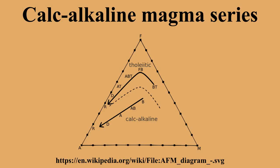Calc-alkaline rocks are rich in alkaline earths and alkaline metals and make up a major part of the crust of the continents. The diverse rock types in the calc-alkaline series include volcanic types such as basalt, andesite, dacite, and rhyolite, and also the coarser-grained intrusive equivalents. They do not include silica-undersaturated, alkalic, or peralkaline rocks.